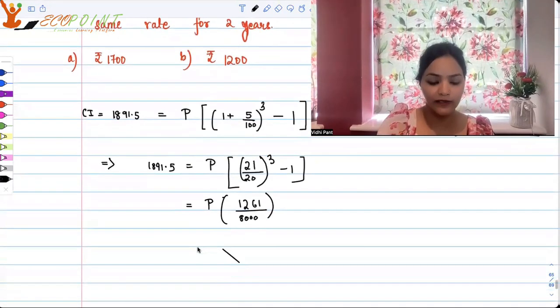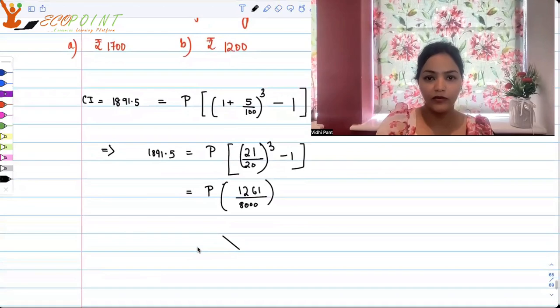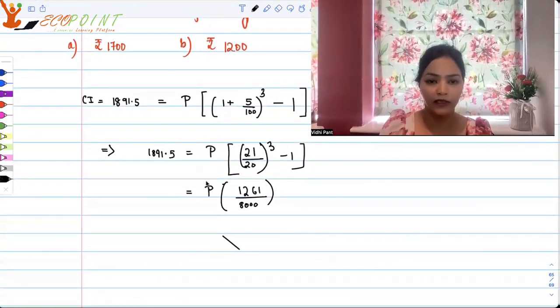P multiplied by, you need to open this up and you will get 1261 upon 8000. So 1261 upon 8000 is what you get after taking the cube.